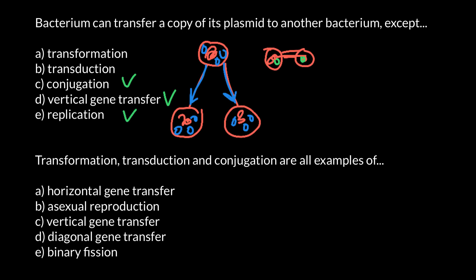Transformation would be an example when one bacterium releases its genetic material outside the cell, including plasmids, and another bacterium can incorporate such a plasmid from its environment or surroundings. This is going to be an example of transformation.